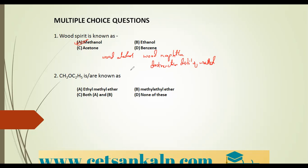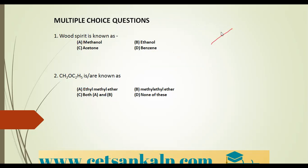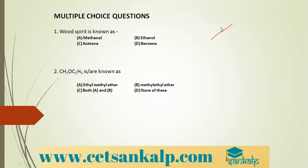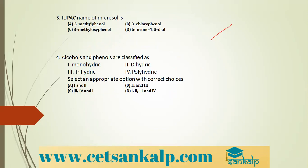The second question: CH3OC2H5 is known as? It is an ether. For IUPAC naming, the smaller alkyl group becomes the alkoxy group, so it is methoxy ethane. The common name is ethyl methyl ether. Students should know both common names and IUPAC names of compounds.